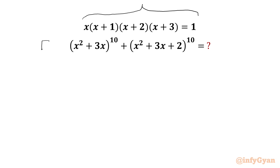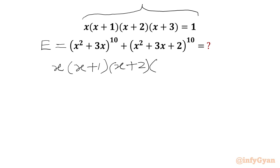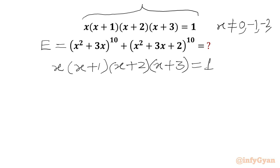Let us get started by writing the required expression as E. Our known equation is x(x+1)(x+2)(x+3) = 1. From this equation, x cannot be equal to 0, because plugging in 0 gives LHS = 0 and RHS = 1. Similarly, if x = -1, LHS = 0 ≠ 1. So x cannot be -1, -2, or -3.